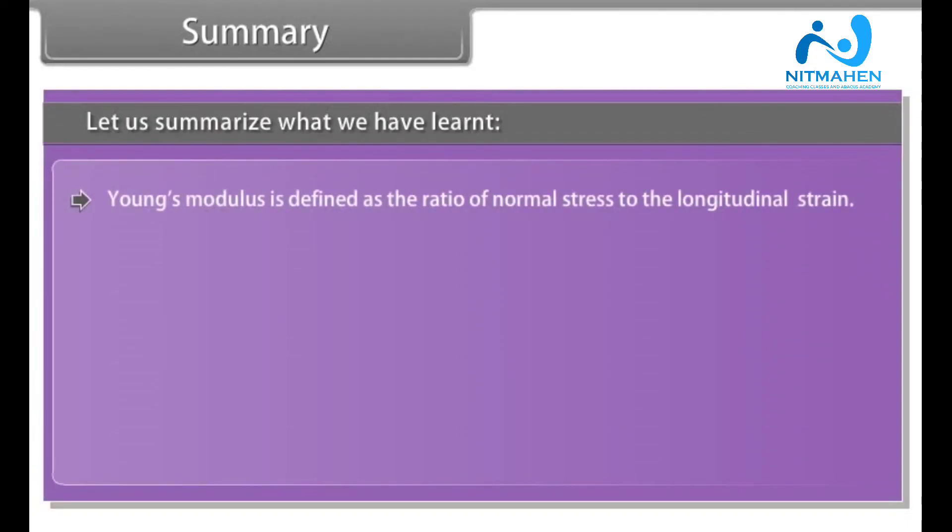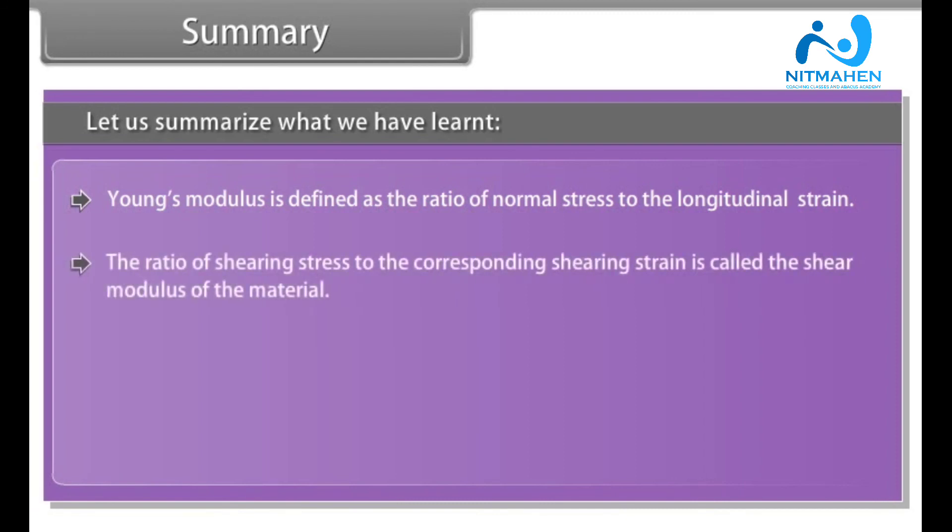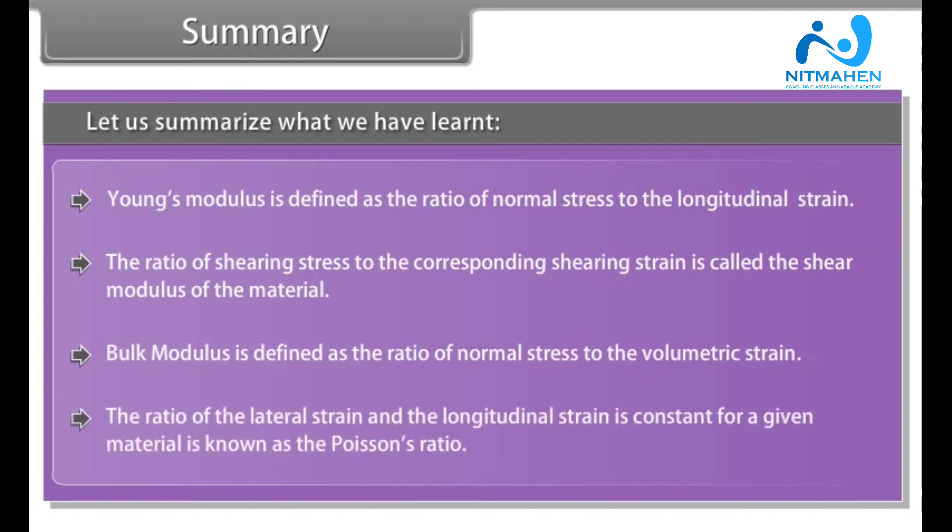Young's modulus is defined as the ratio of normal stress to the longitudinal strain. The ratio of shearing stress to the corresponding shearing strain is called the shear modulus of the material. Bulk modulus is defined as the ratio of normal stress to the volumetric strain. The ratio of the lateral strain and the longitudinal strain is constant for a given material and is known as the Poisson's ratio.